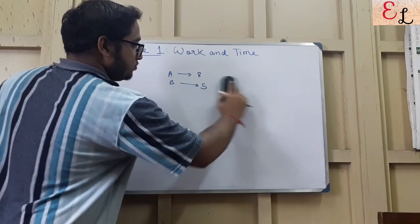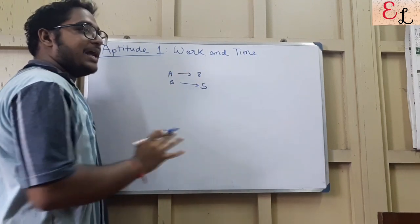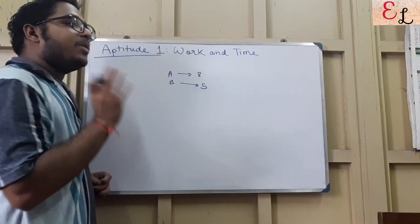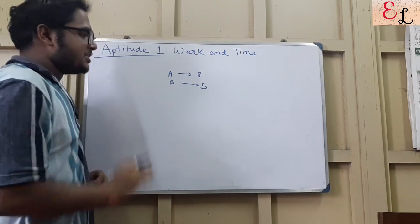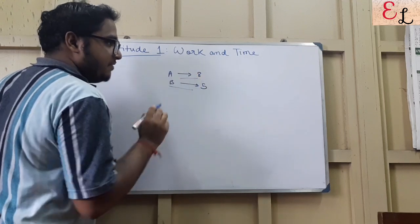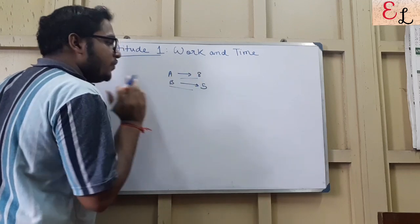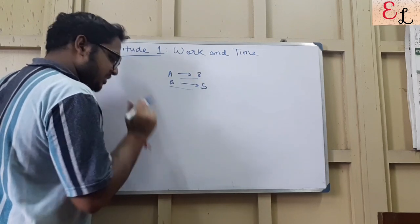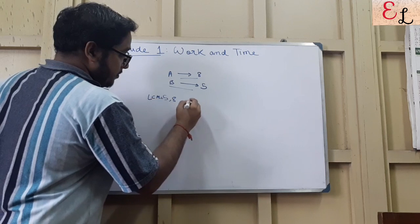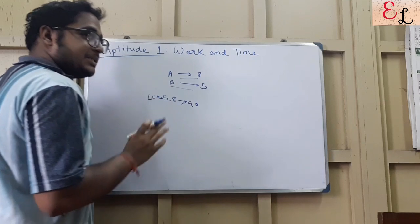How to approach this type of problem? You need to know how to find the LCM. You will have to consider that LCM as the number of units of work done. Considering the simplest problem: A does the work in 8 days, B does the work in 5 days. Together, how many days will it take for A and B to finish the work? The LCM of 5 and 8 is 40.